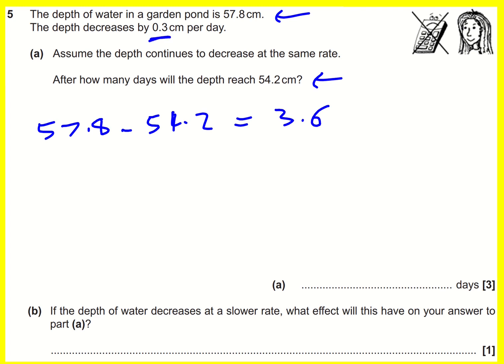Now I can see that it's going to be 0.3cm decrease per day, so if I find out how many 0.3s go into 3.6 then that will tell me how many days.